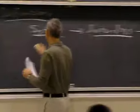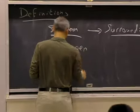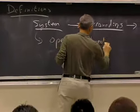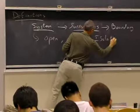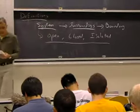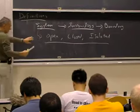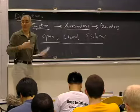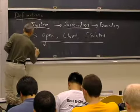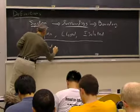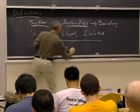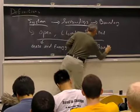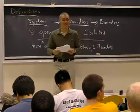OK, more definitions. The system can be an open system, a closed system, or it can be isolated. The definitions are also important here. An open system, as the name describes, allows mass and energy to freely flow through the boundary.